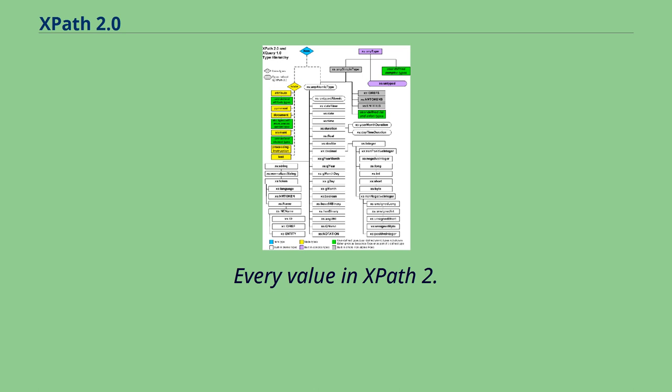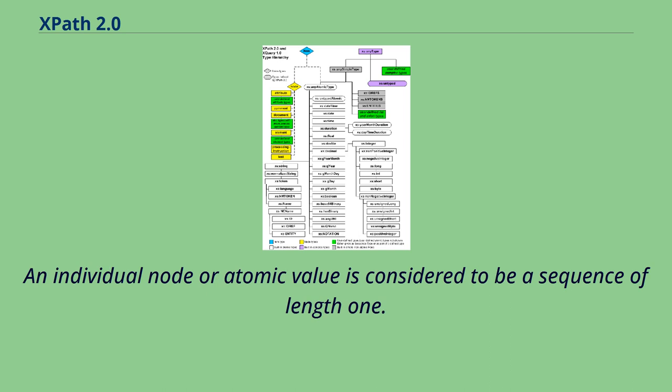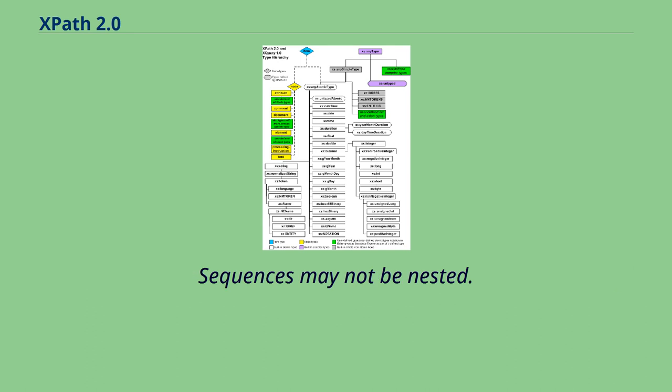Every value in XPath 2.0 is a sequence of items. The items may be nodes or atomic values. An individual node or atomic value is considered to be a sequence of length one. Sequences may not be nested.